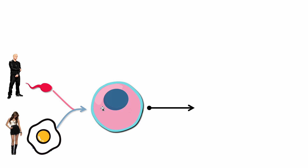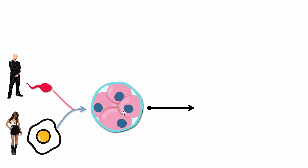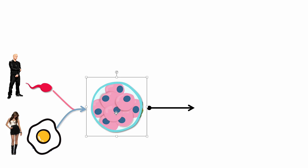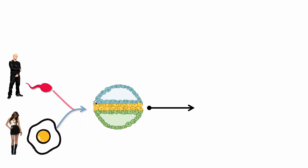This zygote will start dividing by mitosis. Now there are two cells, then four cells, and it keeps duplicating until eventually it's the full baby. Now, all of these cells have the same DNA because they all come from the same zygote — the very same first cell. So they all carry the same DNA.